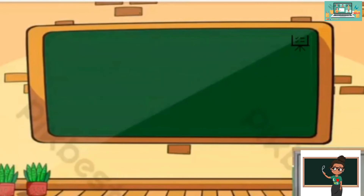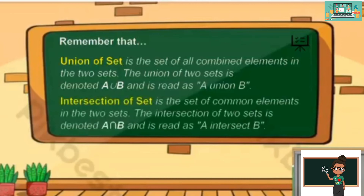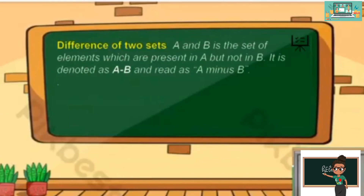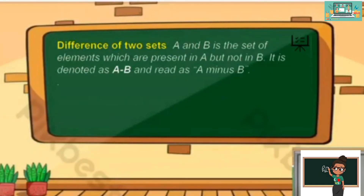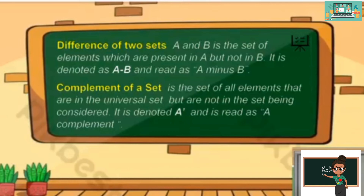Let's have a wrap-up. Always remember that union of sets is the set of all combined elements in the two sets, denoted by this symbol and read as A union B. The intersection of the set is the set of common elements in two sets, denoted by this symbol and read as A intersect B. The difference of two sets A and B is the set of elements present in A but not in B, denoted as A minus B. The complement of a set is the set of all elements in the universal set but not in the set being considered, denoted as A prime and read as A complement.